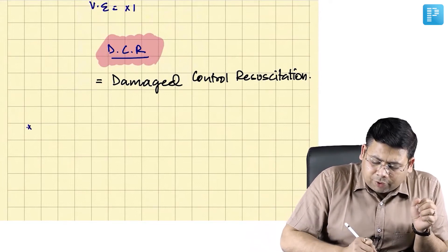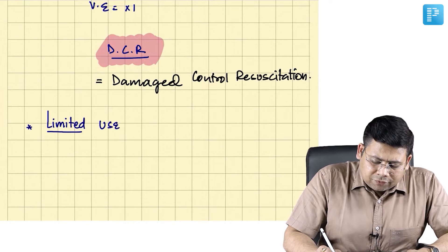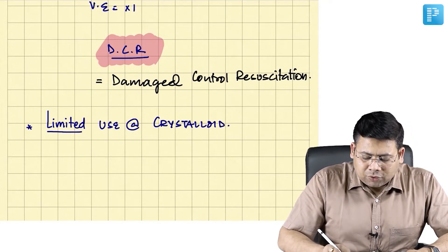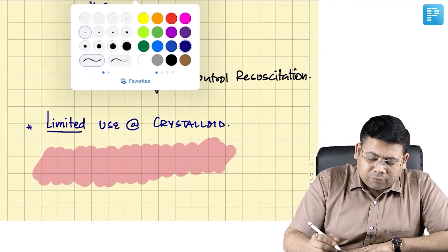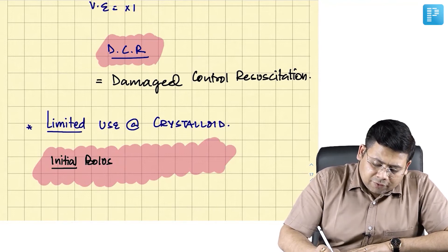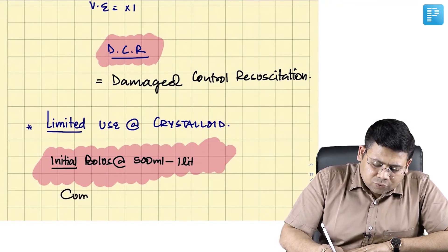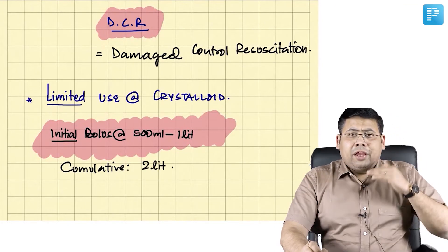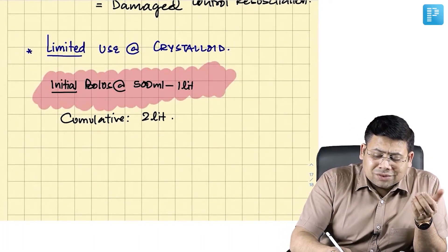Limited use of crystalloids. The logic says initial bolus, and then maximum volume is also commented. So initially you can give the fluid in bolus, an initial bolus of 500 ml to 1 liter. And cumulative, you should not give more than 2 liters. So if you think you require to support volume more than this, instead of this, use blood.